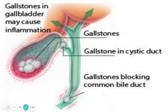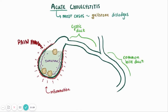Now, chronic cholecystitis — inflammation of the gallbladder. It has many causes; the main cause is gallstones in the gallbladder. They can be in the cystic duct or gallbladder and can block the common bile duct. Acute cholecystitis in most cases is due to a dislodged gallstone, and the major symptom is colicky abdominal pain.